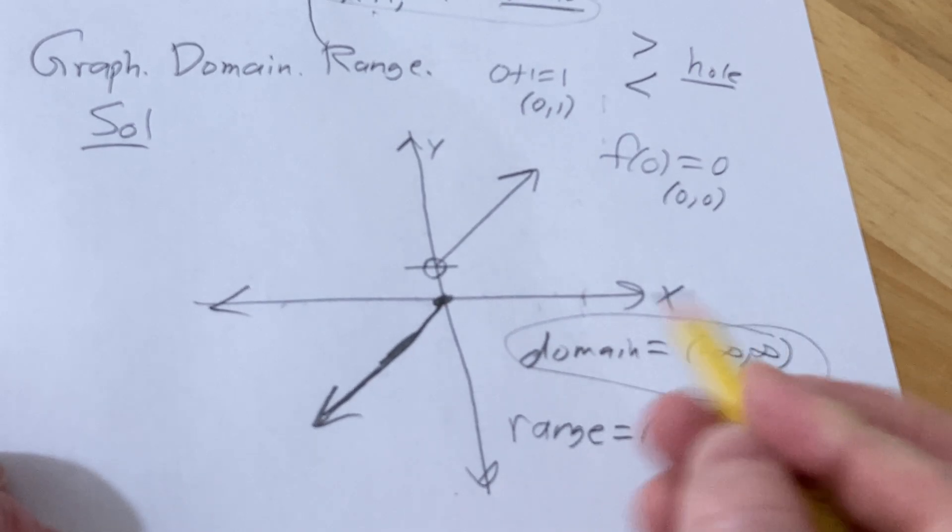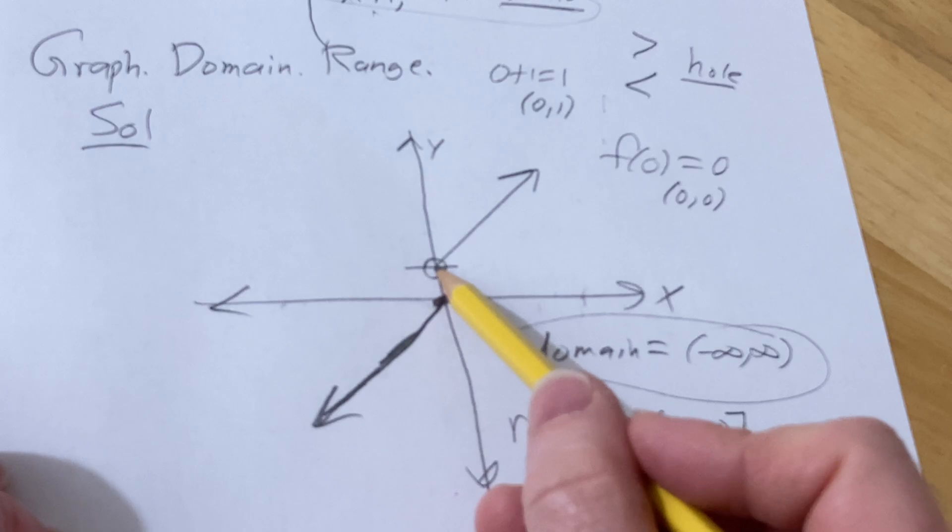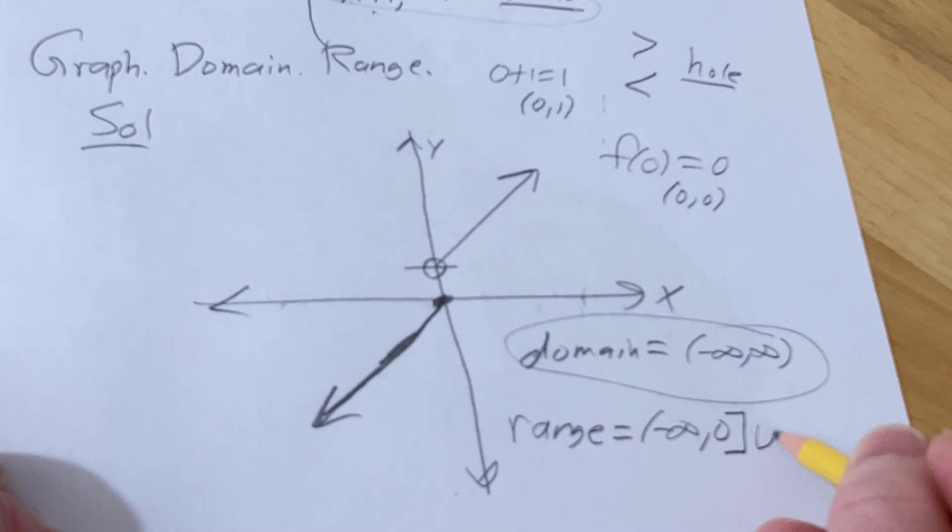You include the zero, so you use a bracket. Okay, and it starts at one, but you don't include it. So you use a parentheses for the one, and then it goes up forever.